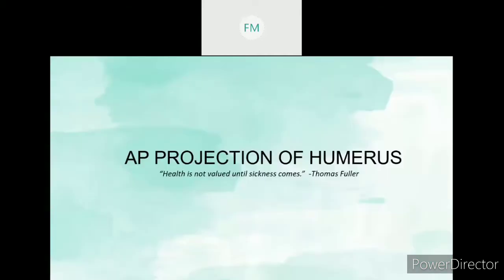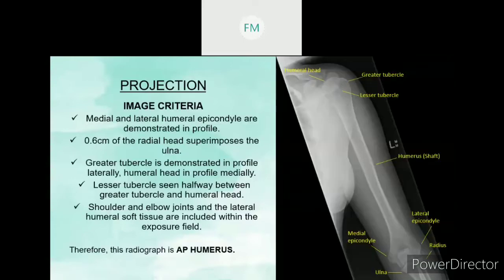First, we will go to the AP projection of humerus. Humerus is one of the longest bones in our body. This is the basic projection that we use during examination of humerus. For the image criteria that we have to look for when we get the AP humerus radiograph: first, we have to look at the inferior part — the medial and lateral epicondyle are demonstrated in profile.